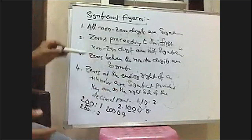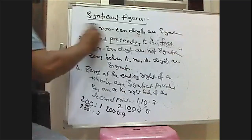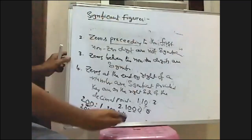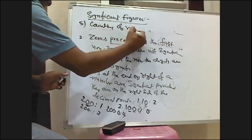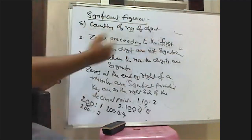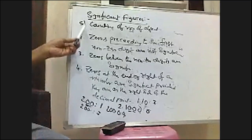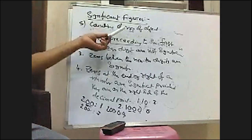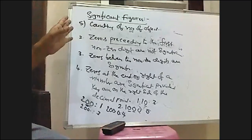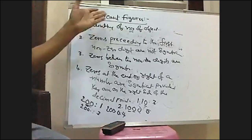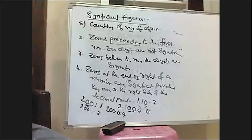Counting of number of objects has an infinite number of significant figures. For example, if we say 20 chairs, 20 is very certain — that's why it has an infinite number of significant figures. If we say 2 balls, then 2 is very certain — that's why it has an infinite number of significant figures. These are the rules to calculate the number of significant figures in a given number.